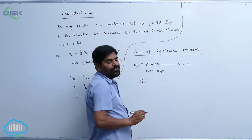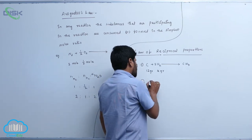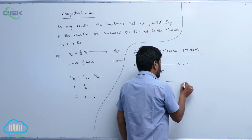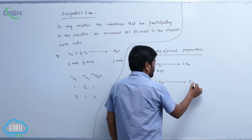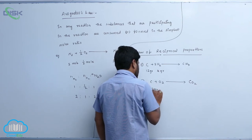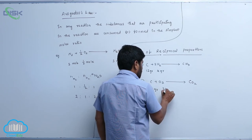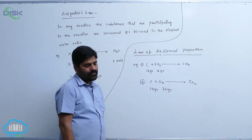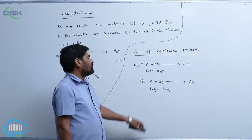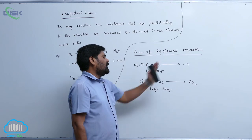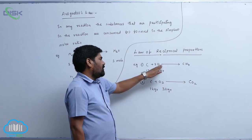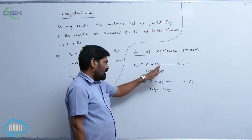The second reaction is when carbon combines with oxygen to form carbon dioxide. Here also, 12 grams of carbon is fixed, but 32 grams of oxygen is involved. So if one atom is fixed between two chemical reactions — carbon is common — then we take the weights of hydrogen and oxygen.